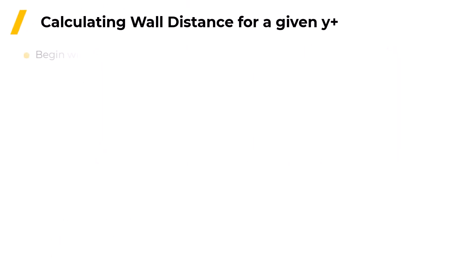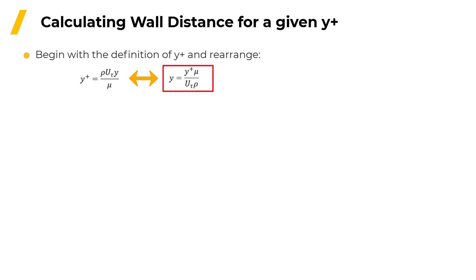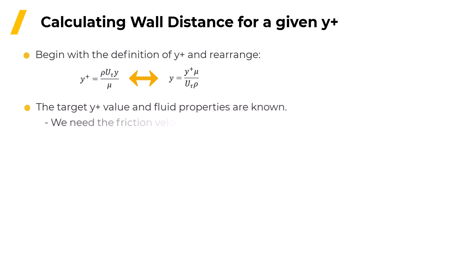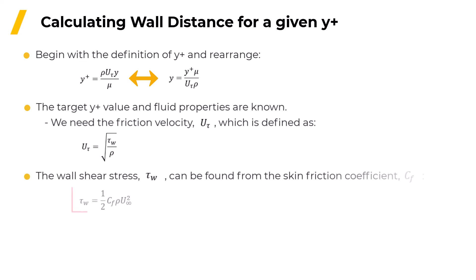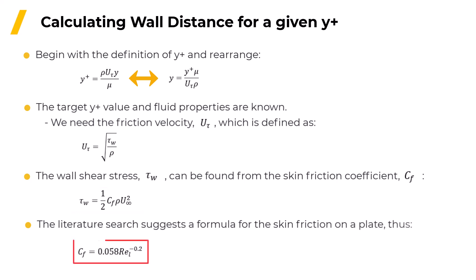To start with, take the definition of Y-plus and rearrange it so the wall distance Y is on the left of the equals sign. We know what value we want for Y-plus and we know the fluid properties, so all that's missing is the friction velocity. To get the friction velocity, we need to know the wall shear stress, and this can be found from the skin friction coefficient. For flow over a flat plate, there's a formula for the skin friction coefficient as a function of Reynolds number, which we already know, so we just need to plug that in and work backwards.